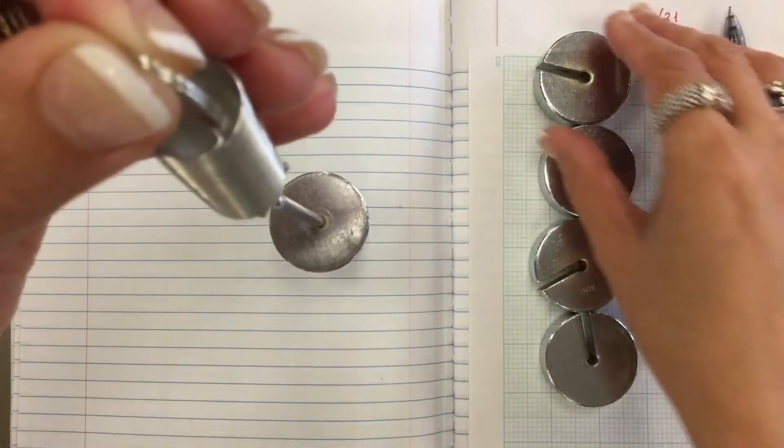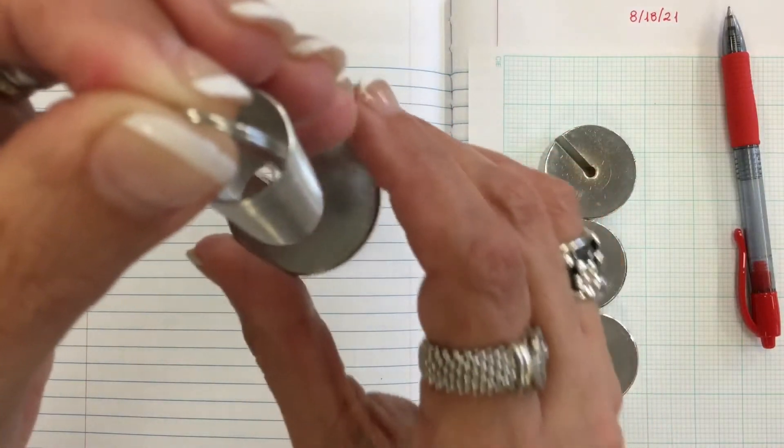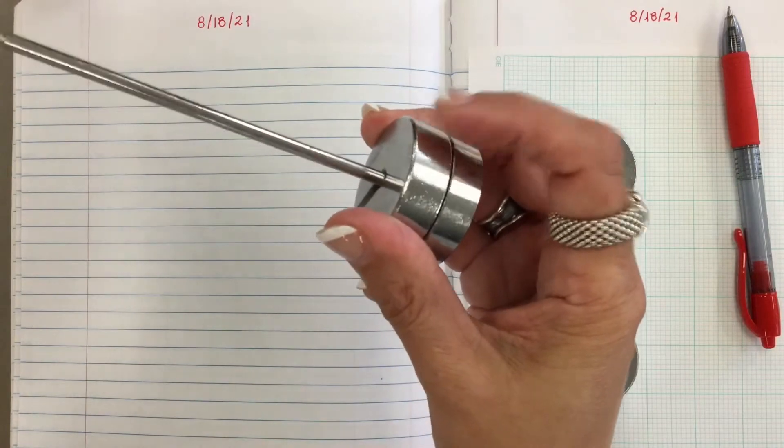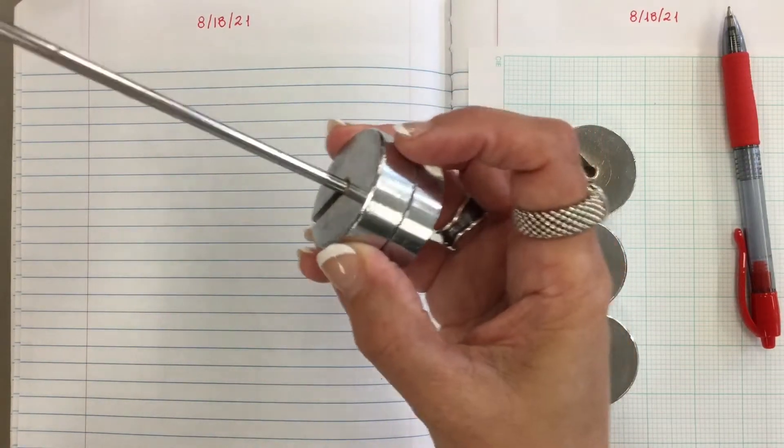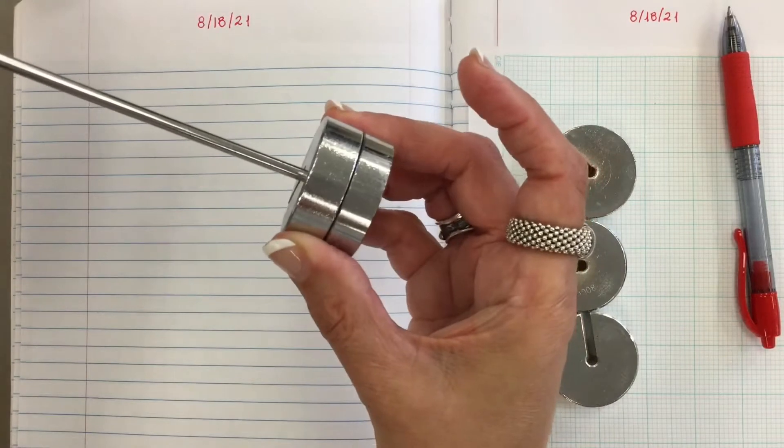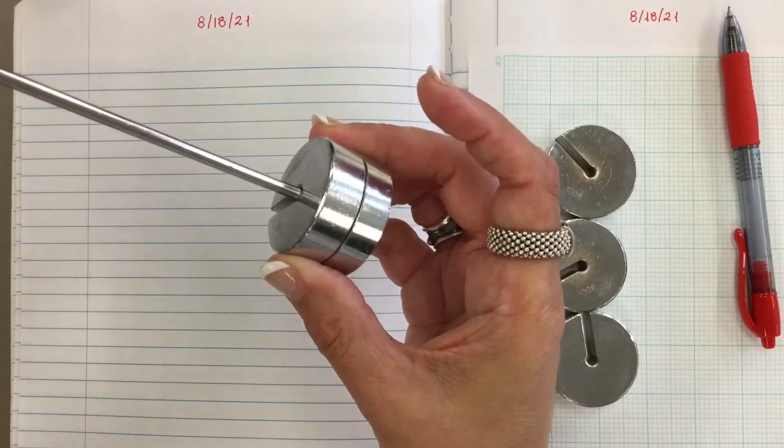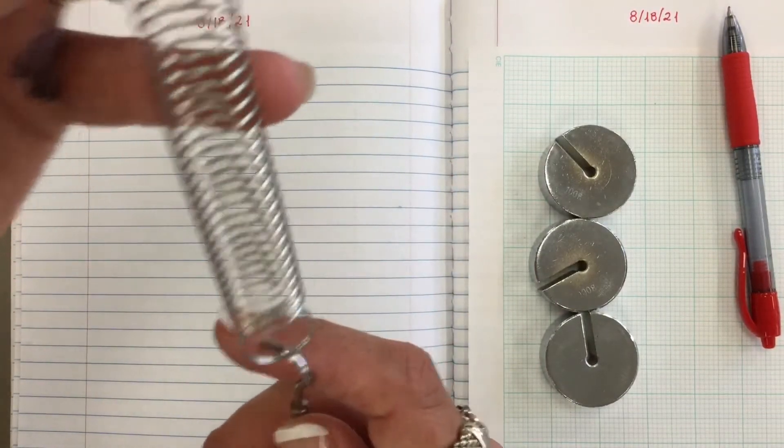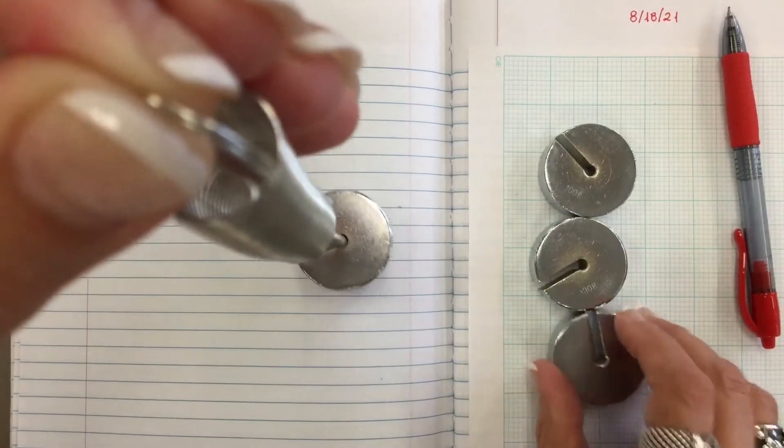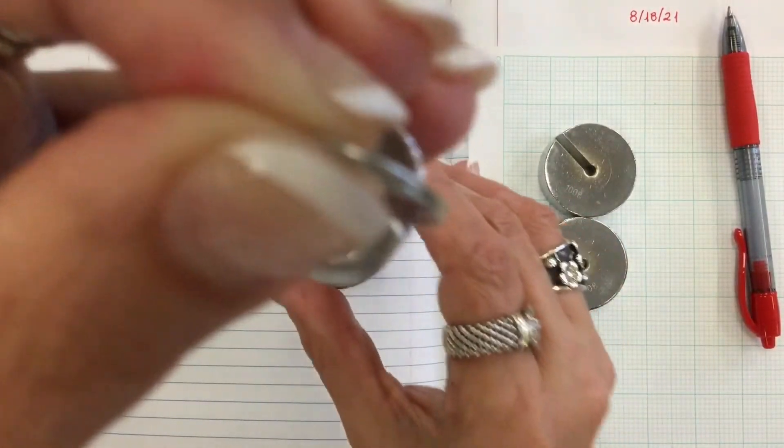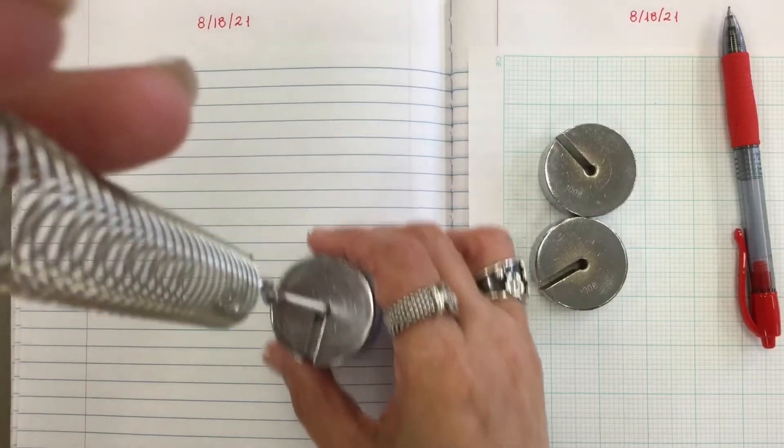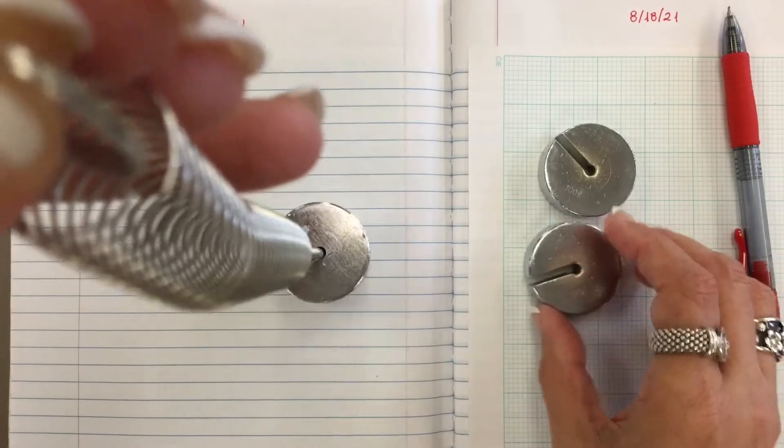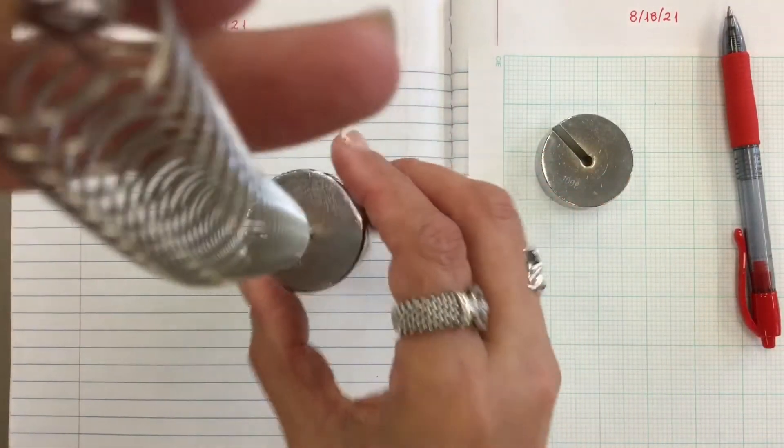Then gradually we are adding one more slot, mass slot with 100 grams. So now I have 200 grams which represents two Newton force and now I have a different extension. Then I add one more and the spring keeps extending as I add more mass.